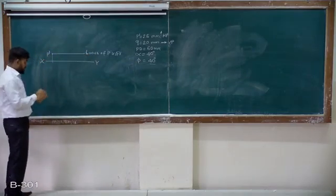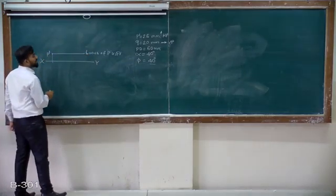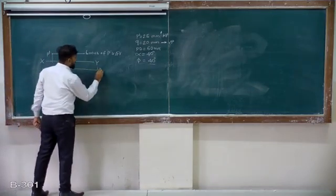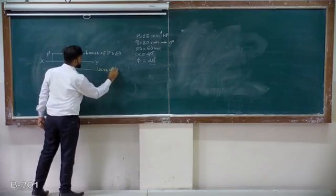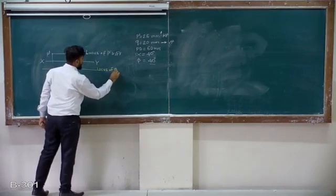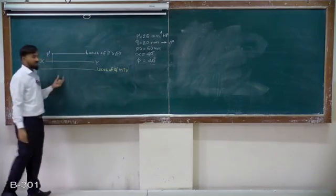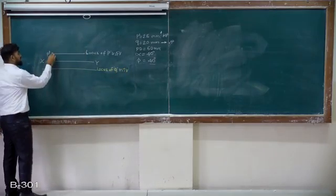I know the locus of point Q is 20mm from VP, so I take this as locus of point Q in top view. Remember, it's locus of Q. This is P' locus in front view.